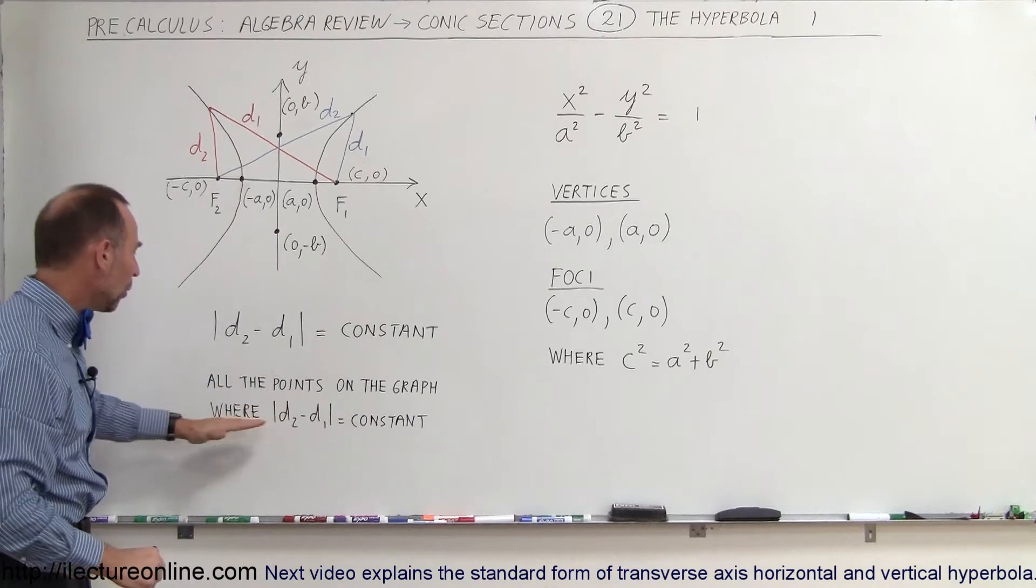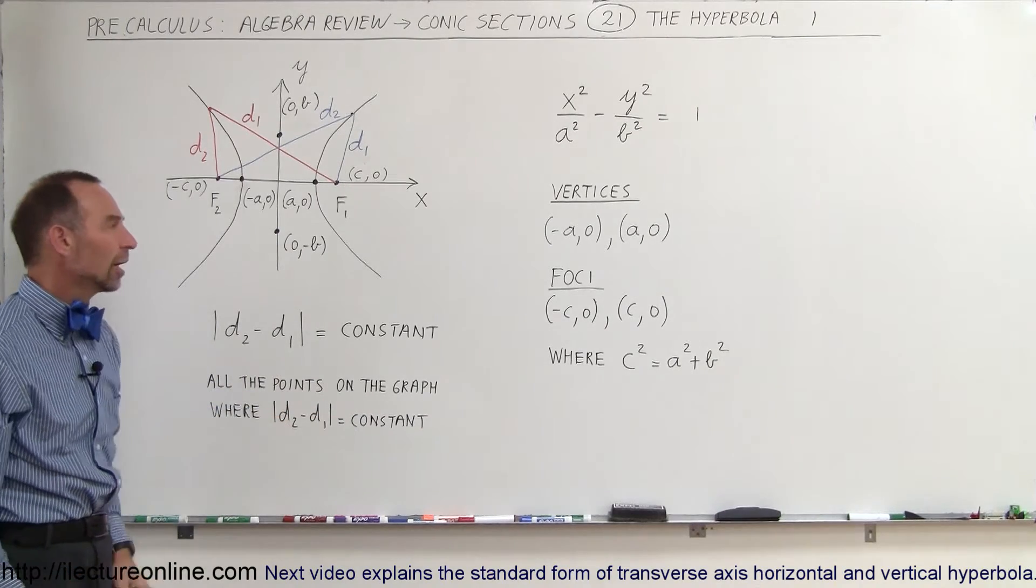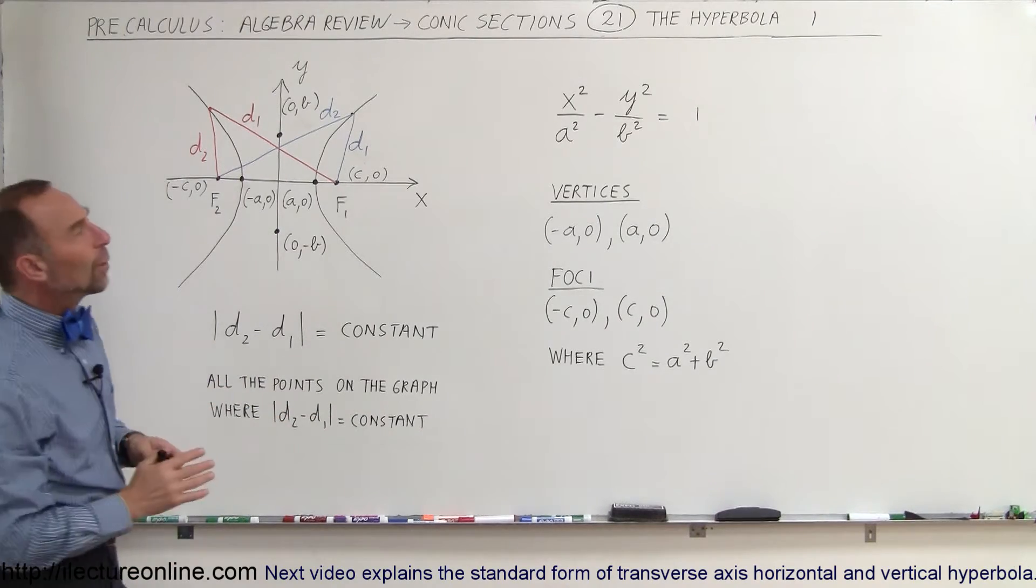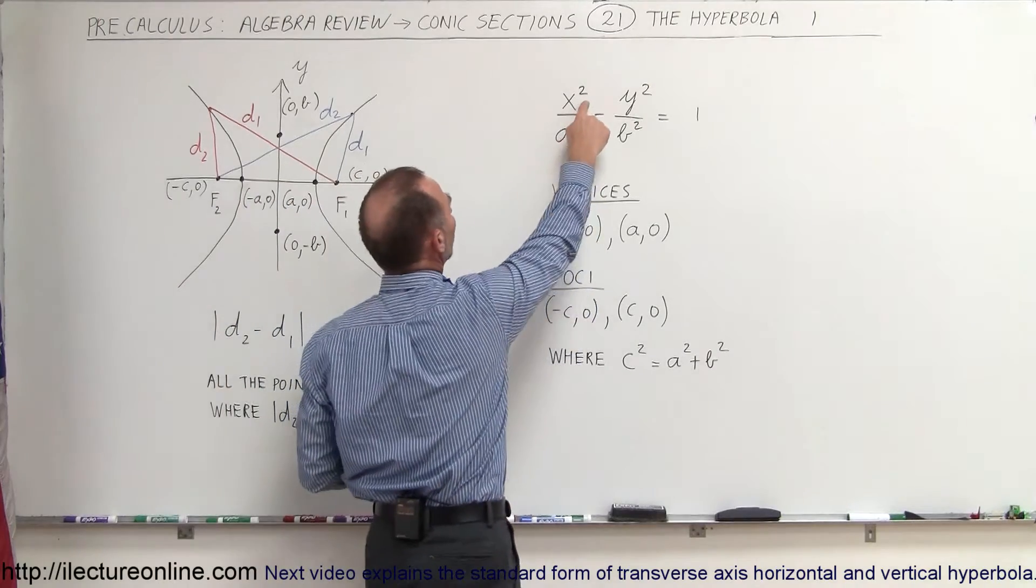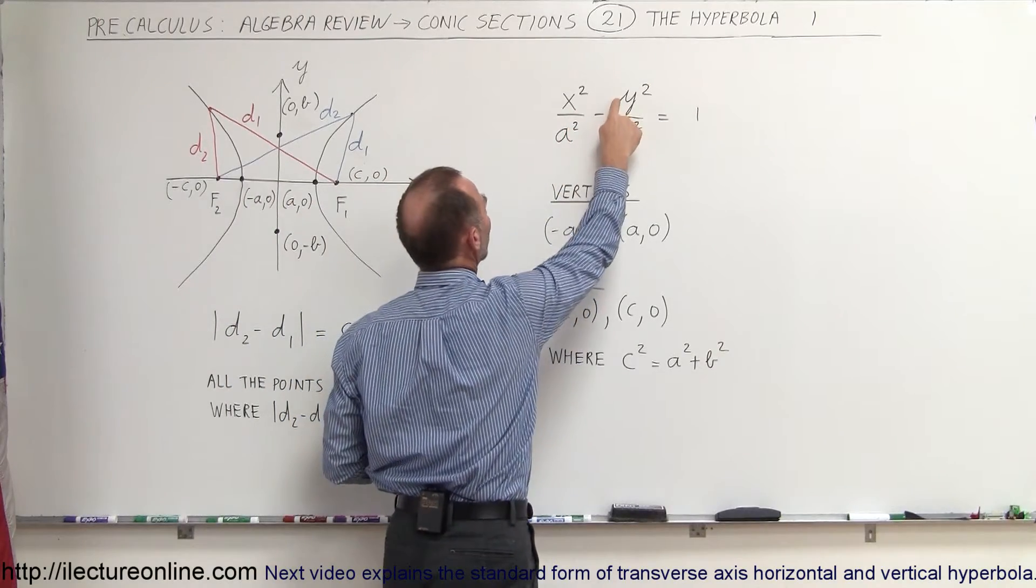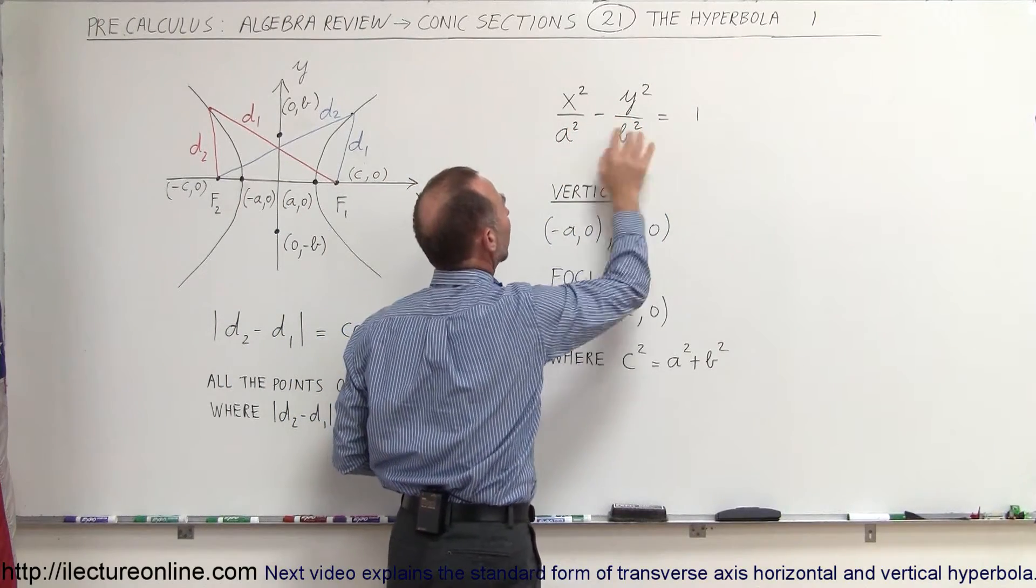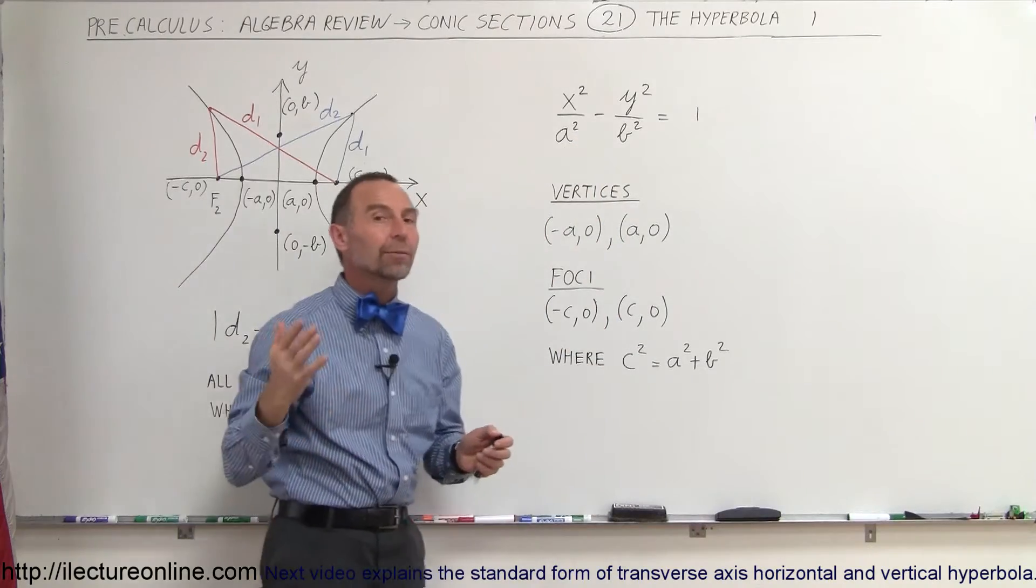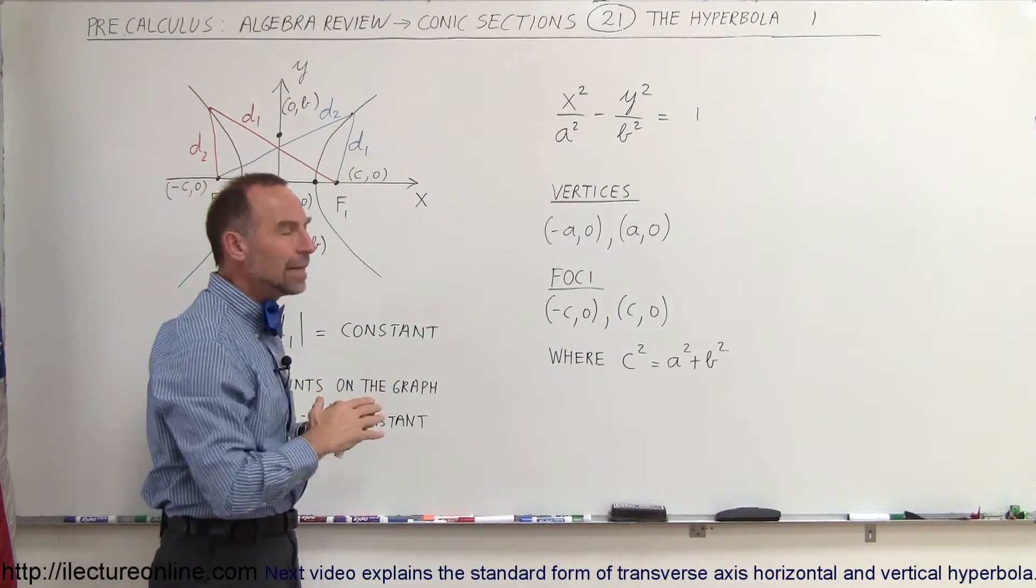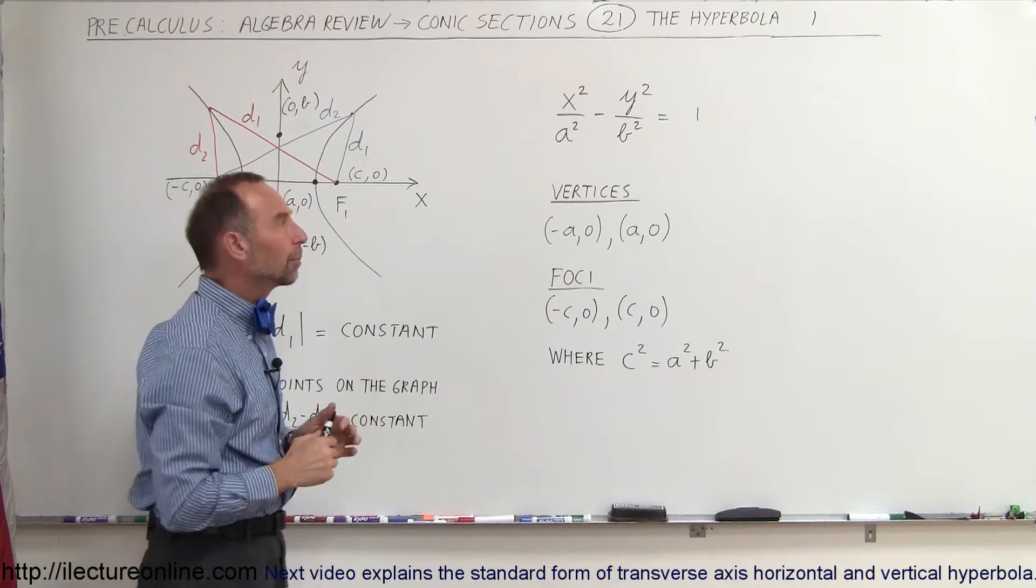So all the points on the graph where d2 minus d1 equals a constant. The general equation for hyperbola is x squared divided by a squared minus y squared divided by b squared equals 1. And it doesn't matter if a is bigger than b or b is bigger than a. It just changes the shape of the hyperbola.